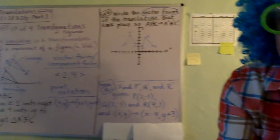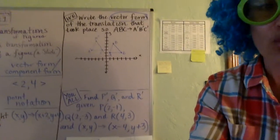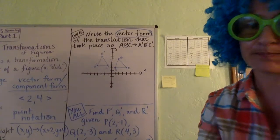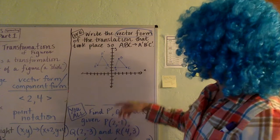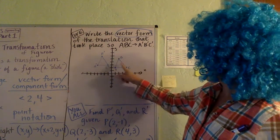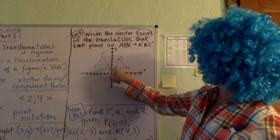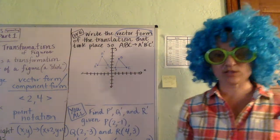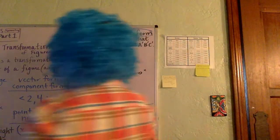All righty, so let's just come on over here and get started with this we problem. Turner tells me you do a we problem next. And so let's take a look. We want to write the vector form of the translation that took place so that ABC slid to A prime, B prime, C prime, okay? So what took place here to go from here to here? Okay, well, let's just check this out.